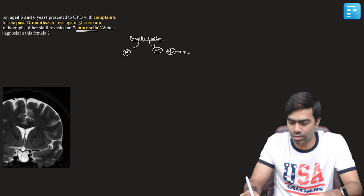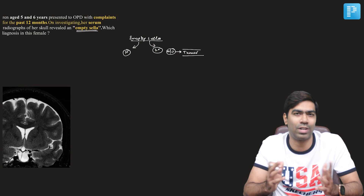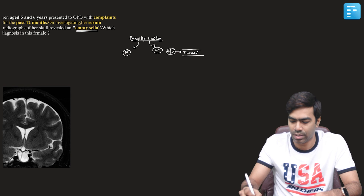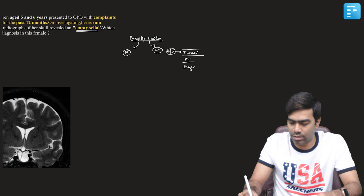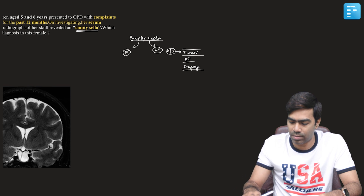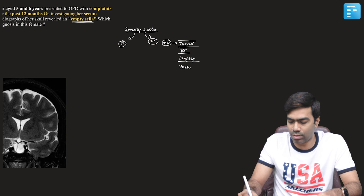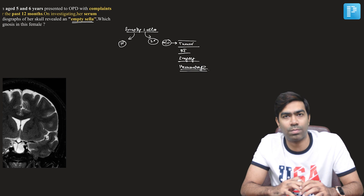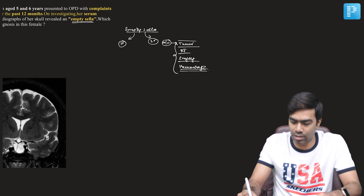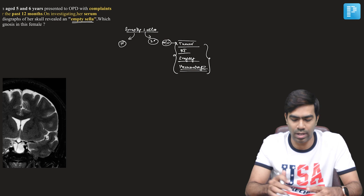Causes of secondary empty sella include a history of a pituitary tumor — like a micro or macroadenoma — causing necrosis, so the pituitary is no longer seen in the sella. Second, it could be prior radiotherapy or prior surgery which removed or caused necrosis of the pituitary gland, or prior hemorrhage into the pituitary — a process we call apoplexy — which could have caused pituitary necrosis.